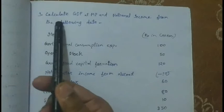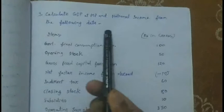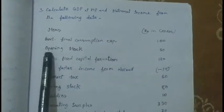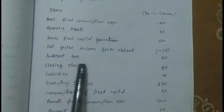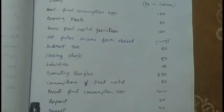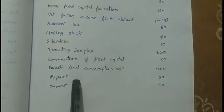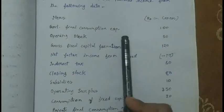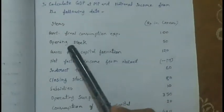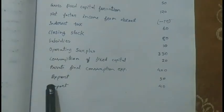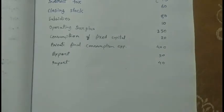Now I am going to solve the third question: calculate GDPMP and national income from the following data. First we have to check which method should be applied. The data includes capital formation, net factor income from abroad, closing stock, subsidies, operating surplus — components of the income method — as well as consumption of fixed capital and private final consumption expenditure, which indicate the expenditure method.